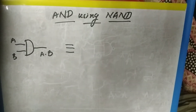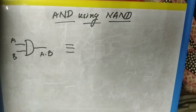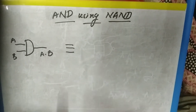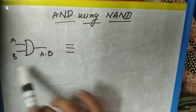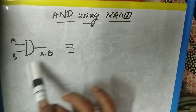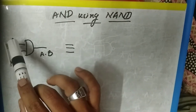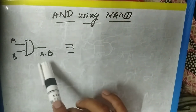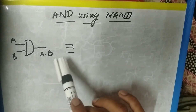Hi students, today we are going to learn about AND gate which can be constructed using NAND gate. The AND gate symbol is like this, with A and B as inputs, we get A dot B as output.